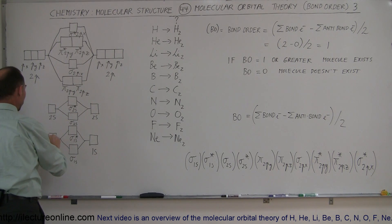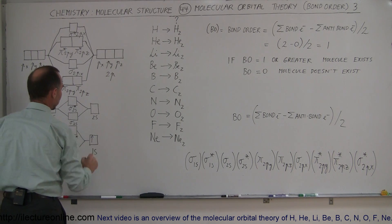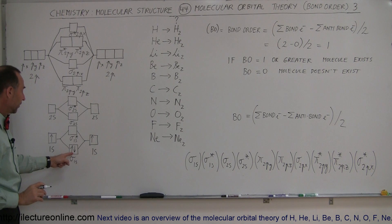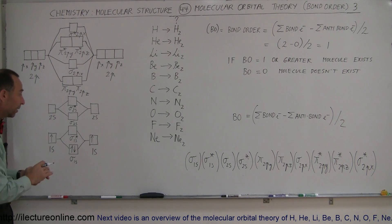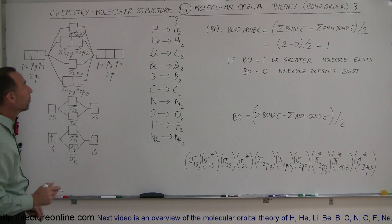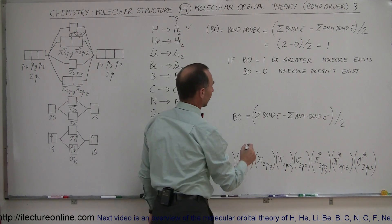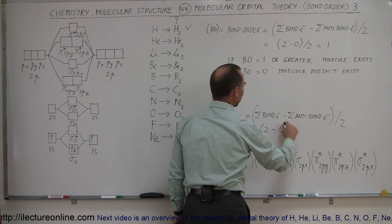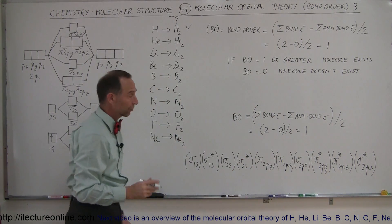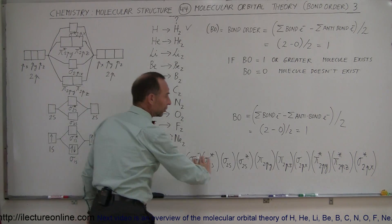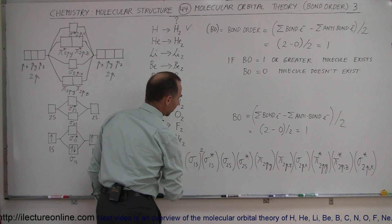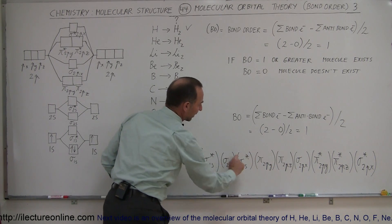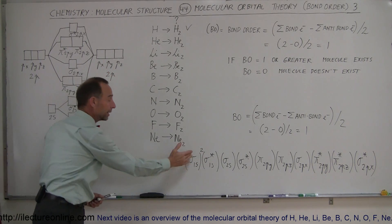With hydrogen, we have one electron in the 1s orbital for each hydrogen atom. When those two come together, they form a sigma bond. Since we have one pair of electrons making a sigma bond and no electrons in the anti-bond, a bond is possible and H2 can exist. The bond order is two electrons forming a bond pair minus zero electrons forming an anti-bond, divided by two, which equals one. Bond order greater than zero means we have an existing molecule. In shorthand notation, we have two electrons forming a sigma 1s bond.